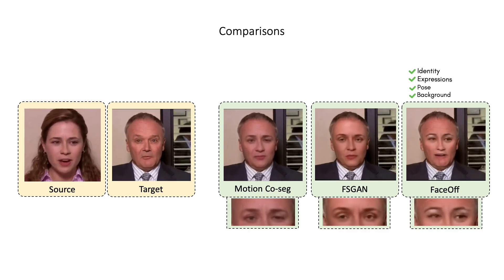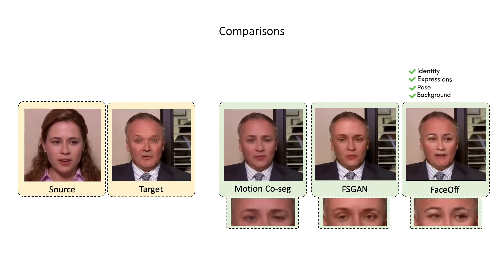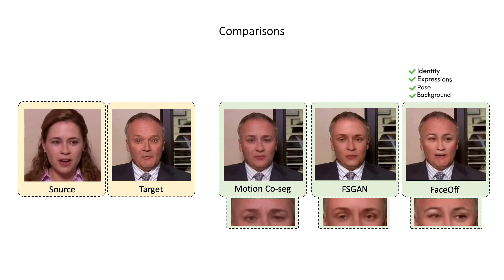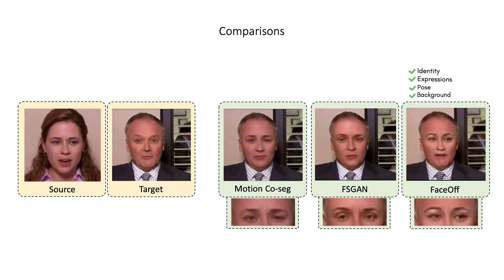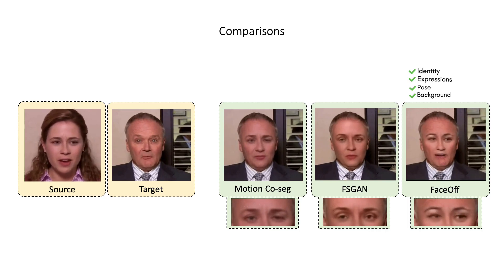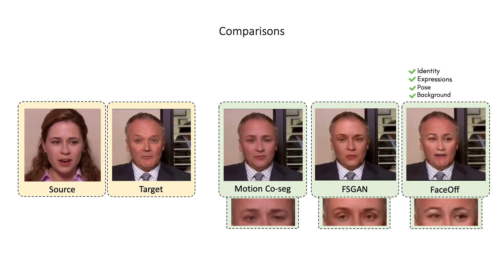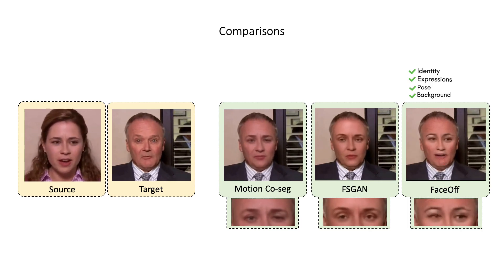We show one more example with cross-gender face swapping. Despite the drastic change in the overall face structure, Face Off successfully swaps both the identity and the source expressions in a coherent manner. Unlike Face Off, the existing models fail to fully swap the identity and have unnatural eye movements.